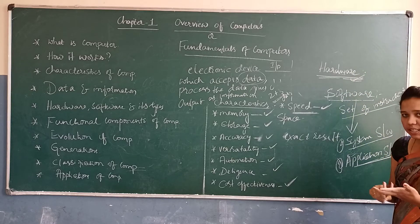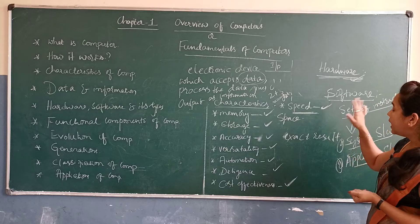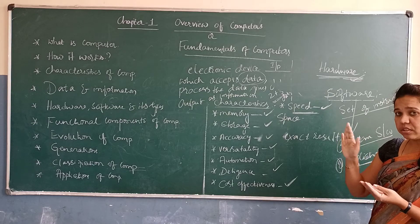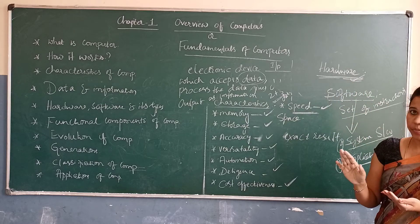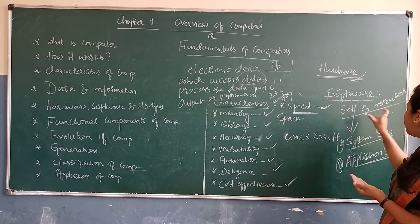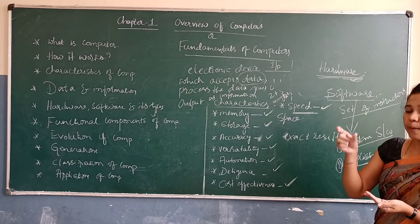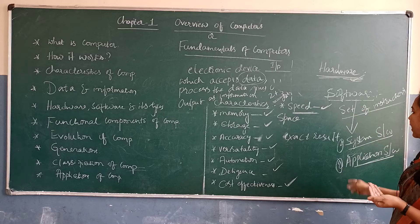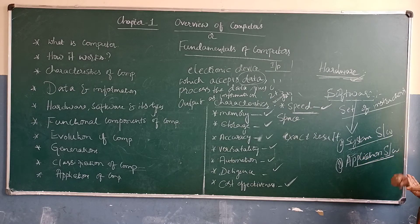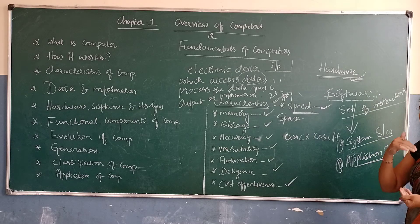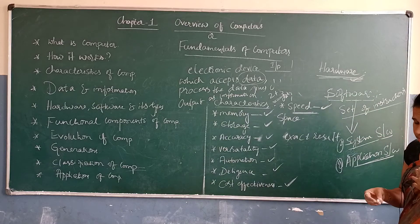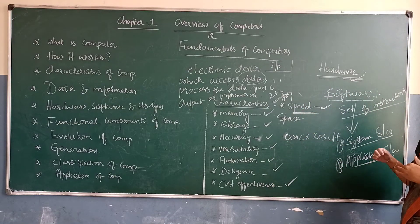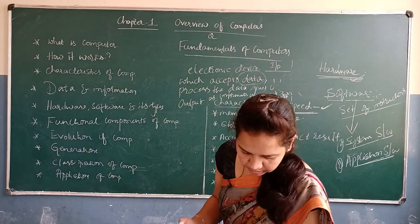To summarize: hardware means physical components which we can touch and feel — for example, monitor, keyboard, mouse, and joystick. Software means a set of instructions or set of programs. Software is divided into two types: system software, which is built-in, and application software, which is needed and used by the user.